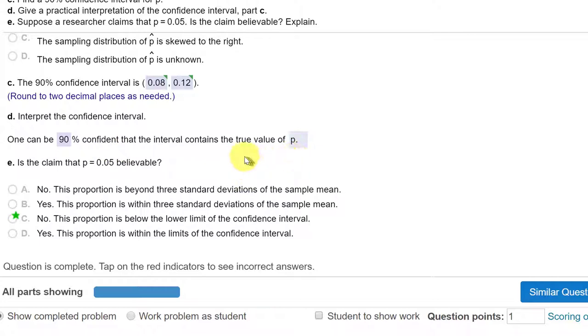And then we want to test a claim. Is the claim that P equals 0.05 believable? We can do that a couple ways later on in the course we will do hypothesis tests like this and that's where we will actually be comparing the standard deviations if you will the z scores to see if it's greater than our alpha level but here we just need to check is this value inside the confidence interval and it's not it's not inside the confidence interval therefore it is not a reasonable estimate or reasonable claim.